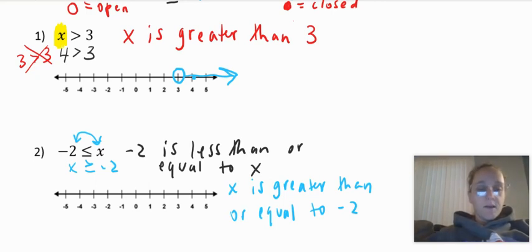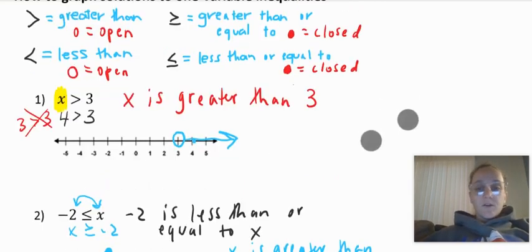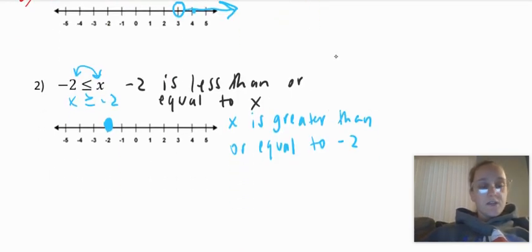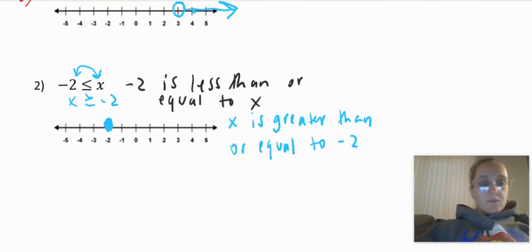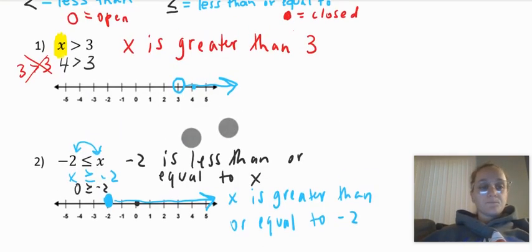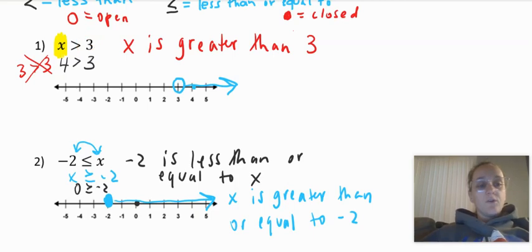Let me put my dot at my boundary point. We know it's negative two and it's going to be a closed dot. Remember, if it's less than or equal to, I'm going to use the closed dot. I have my closed dot and then let me use a test point. The alligator is facing the x, so what's a number bigger than negative two? How about zero? Zero is greater than or equal to negative two, so if zero is over here, my arrow is going to go to the right. You want to plot the boundary point and then figure out which way your arrow goes.